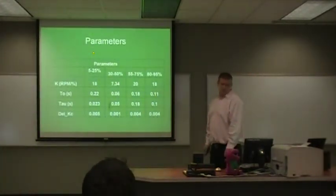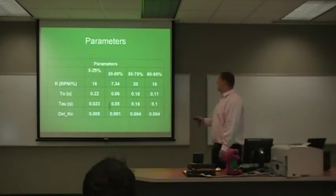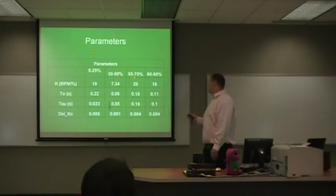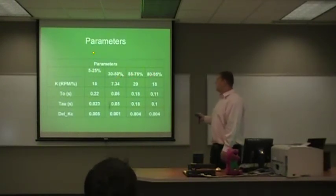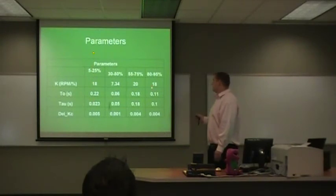The parameters used are right here. We did this for four different segments: 5 to 25 percent input, 30 to 50 percent input, 55 to 75 percent input, and 80 to 95 percent input. And here are the different parameters that we used for the root locus model.